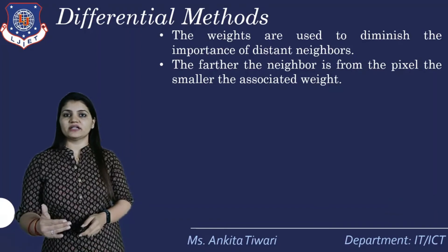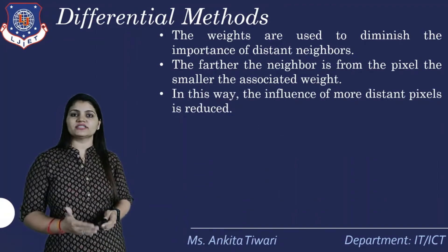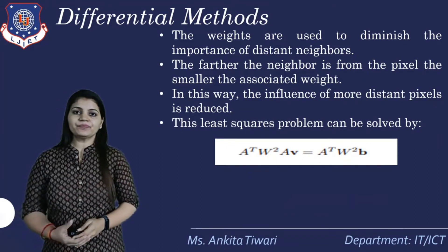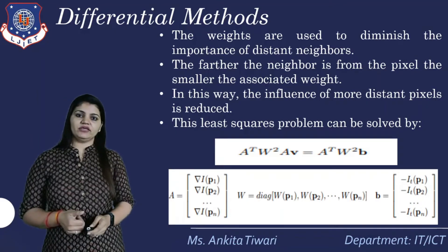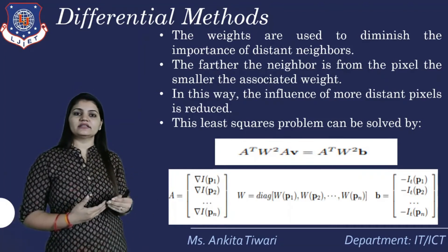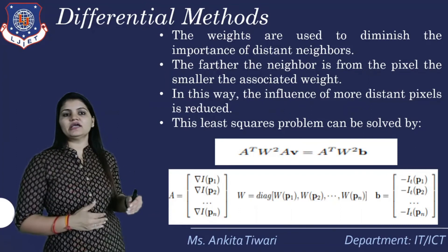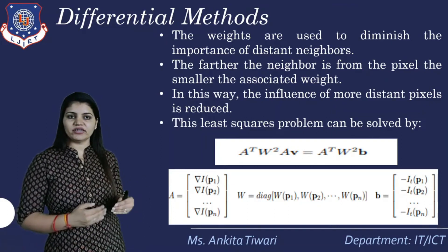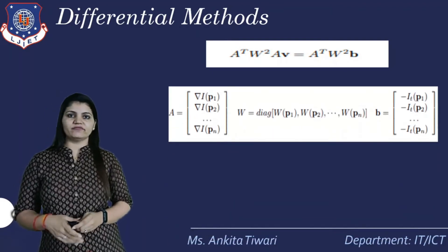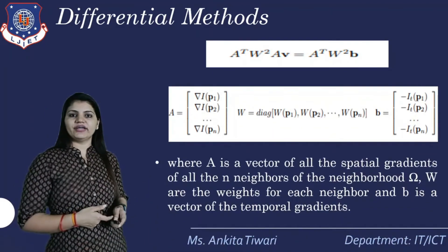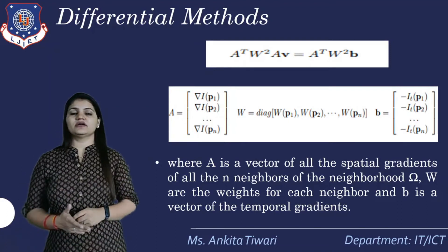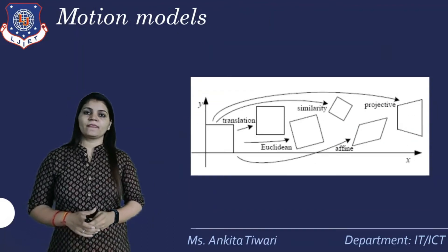The farther the neighbor from the pixel, the smaller the associated weight, so the influence of more distant pixels is reduced. This least-squares problem is solved as: (A^T W² A) d = A^T W² b, where A is the vector of all spatial gradients of the n neighbors in neighborhood Ω, W is the diagonal matrix of weights for each neighbor, and b is the vector of temporal gradients.